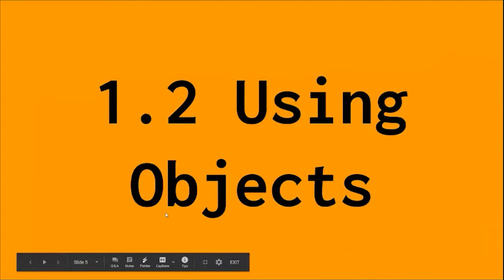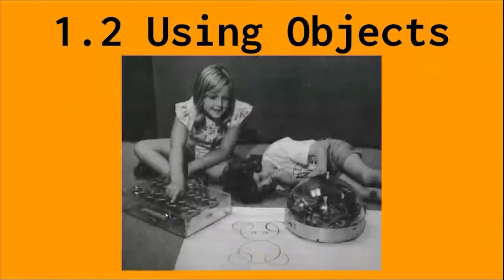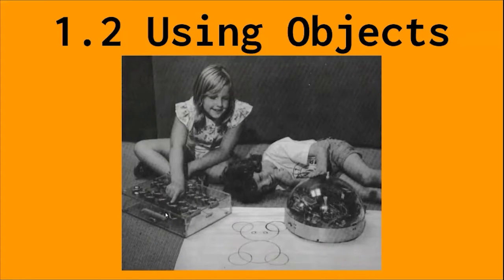Section 1.2 is all about using objects. Think of objects as a virtual object — like an object in real life. So just think of a virtual object, that's what it means. In this case, it was a turtle.